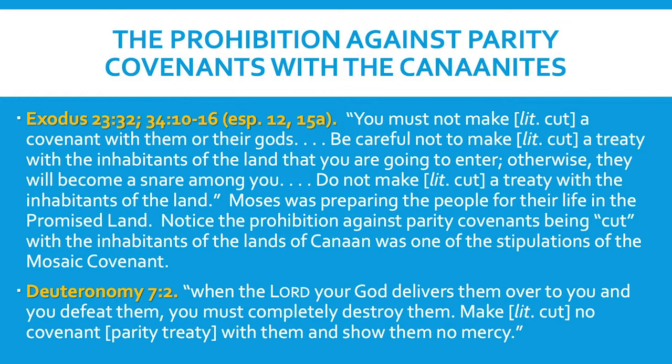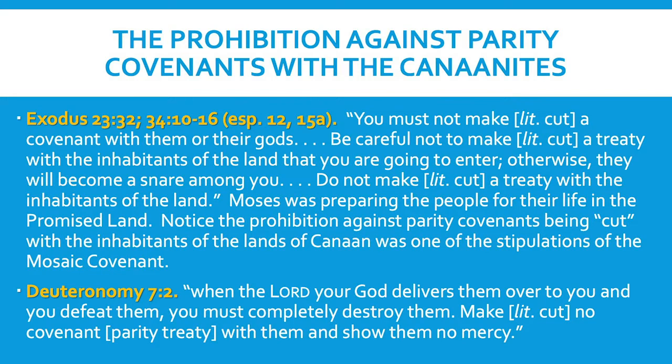We have briefly taken a look at the prohibition against Parity Covenants. Even though the patriarchs were permitted to make Parity Treaties with their neighbors, as Moses prepared the children of Israel to enter into the Promised Land, both in the book of Exodus and in the book of Deuteronomy, the prohibition was clear that the people of Israel were not to enter into Parity Treaties with the inhabitants of the Promised Land.